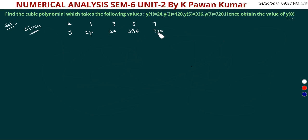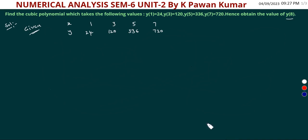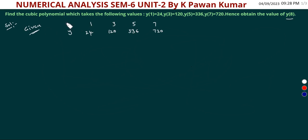Now the values are set in the table. To find the cubic polynomial, we will use Newton's forward interpolation formula — Newton's forward difference method.